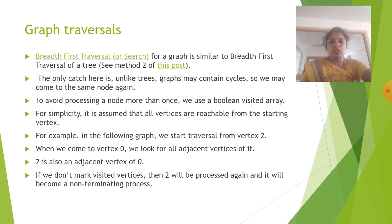So 2 is also an adjacent vertex of 0. If we don't mark visited vertices, then 2 will be processed again and it will become a non-terminating process. So we have to always mark when we visit the vertices.